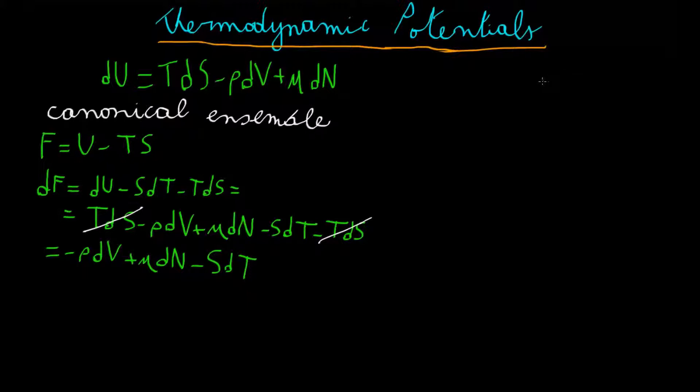The derivative of F with respect to V, performed keeping all the other independent variables constant, dF/dV is minus P, while dF/dT is minus S, and finally dF/dN is mu.